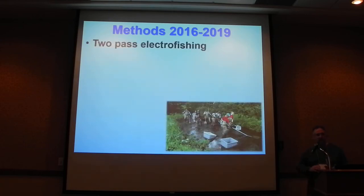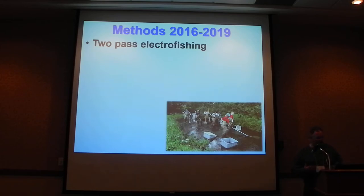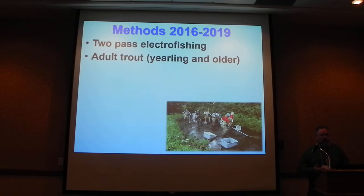We used two-pass electrofishing. We know three-pass is more the gold standard and gives more precision, but practically we'd only get one stream done a day that way. By doing two passes, we could get two streams done each day — much more efficient. We were looking at adult trout abundance, considered yearling and older, and getting population estimates, which we're reporting in numbers per mile since sites varied somewhat in length from year to year.